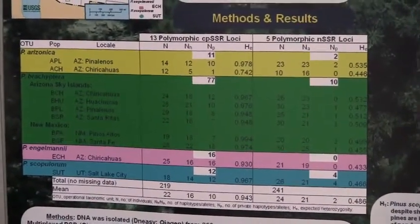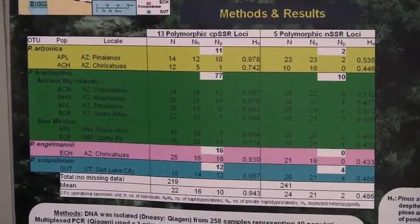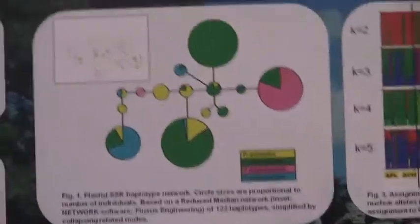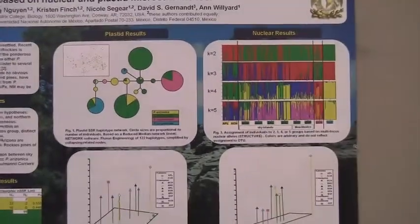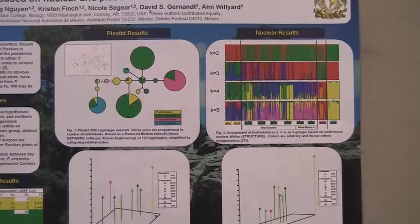After amplifying our DNA and doing a PCR, we did a haplotype analysis as seen here for the plastid results and structure for the nuclear. I'm going to let Kristen explain exactly what this means.